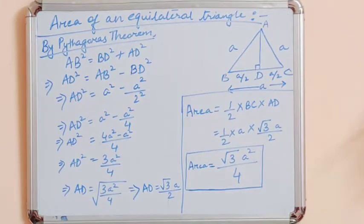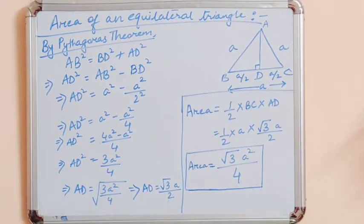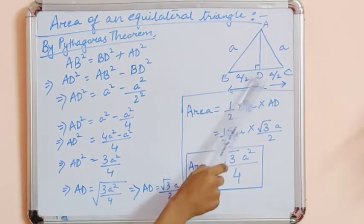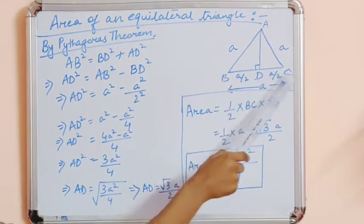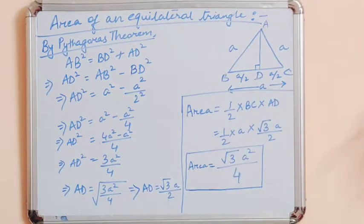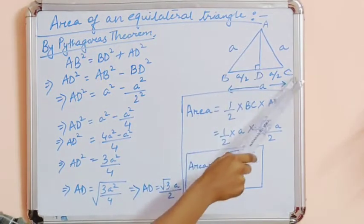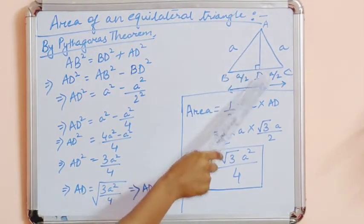Now let us look at the derivation for calculating the area of an equilateral triangle. We have triangle ABC where all sides are equal to A. If we drop a perpendicular AD on BC, it divides BC into two equal halves: BD = DC = A/2. To calculate area we need base BC = A and height AD, so we must first find AD.